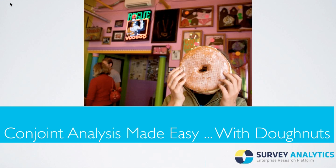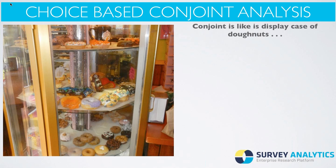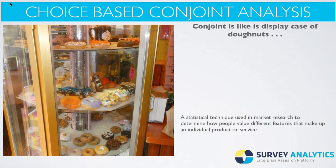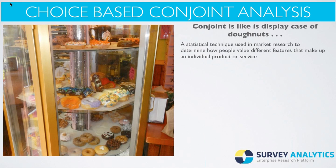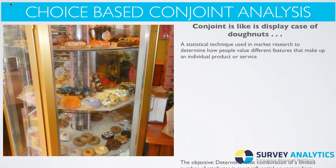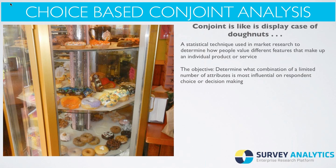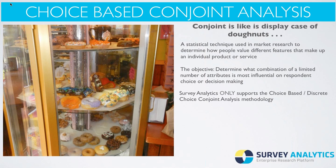Let's get started with conjoint analysis made easy with donuts. I like to look at conjoint analysis kind of like a display case of donuts. It's a statistical technique used in market research to determine how people value different features that make up an individual product or service. The objective is to determine what combination of a limited number of attributes is most influential on a respondent's choice or decision-making. At Survey Analytics, we only support the choice-based or discrete-choice conjoint analysis methodology, or CBC.